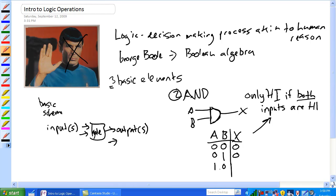Same thing for AB, one, zero, zero. But now, both inputs are high. A and B coming in. Look, here we go, only high if both inputs are high. There you go, that's an AND gate.